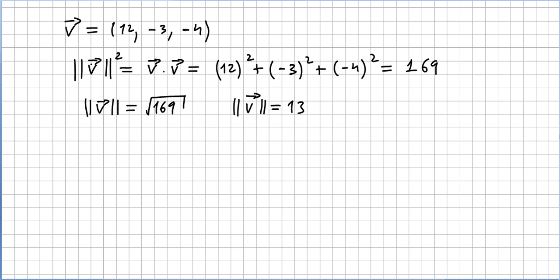Let's say we have vector v and vector v has components 12, minus 3, and minus 4. The norm of v squared will be v times v, so that will be 12 squared plus minus 3 squared plus minus 4 squared, which is 169. Taking the square root of 169, the norm or length of vector v is 13.